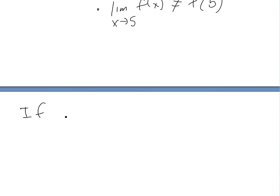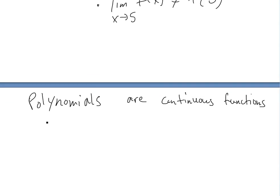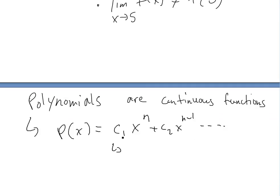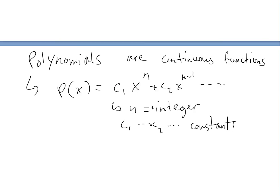Another thing on continuous functions: if you have a polynomial, polynomials are always continuous functions. They are in the form p(x) = c₁xⁿ + c₂xⁿ⁻¹ + … where n is a positive integer and c₁, c₂, … cₙ are constants. An example is p(x) = 3x³ + 5x². These are always continuous because you can always get a value. If you plug in, say, 3, you get a value, and if you plug in something close to 3, you get close to that value.